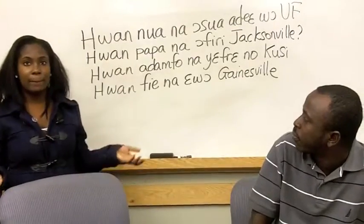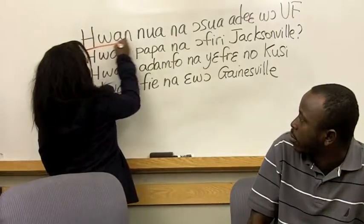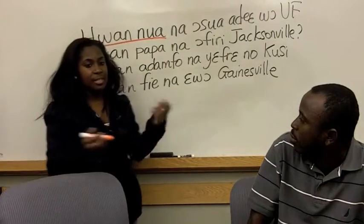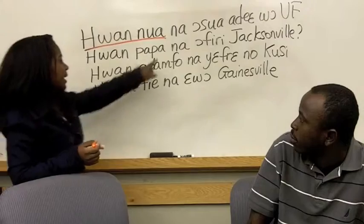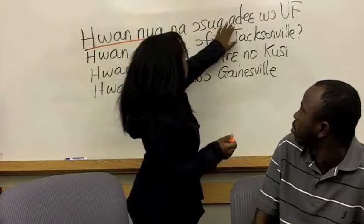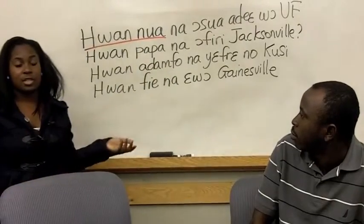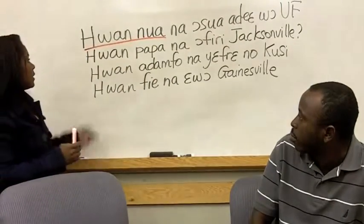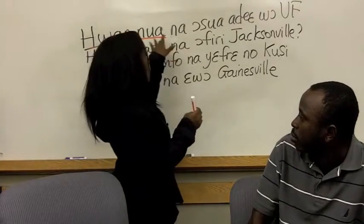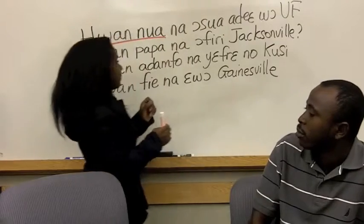Whine nuya means 'whose siblings.' Because it's at the beginning of the sentence, it is followed by na. O suya adie wo iwa means 'he or she studies at iwa.' Placing whine nuya before it gives us 'whose sibling studies at iwa.'